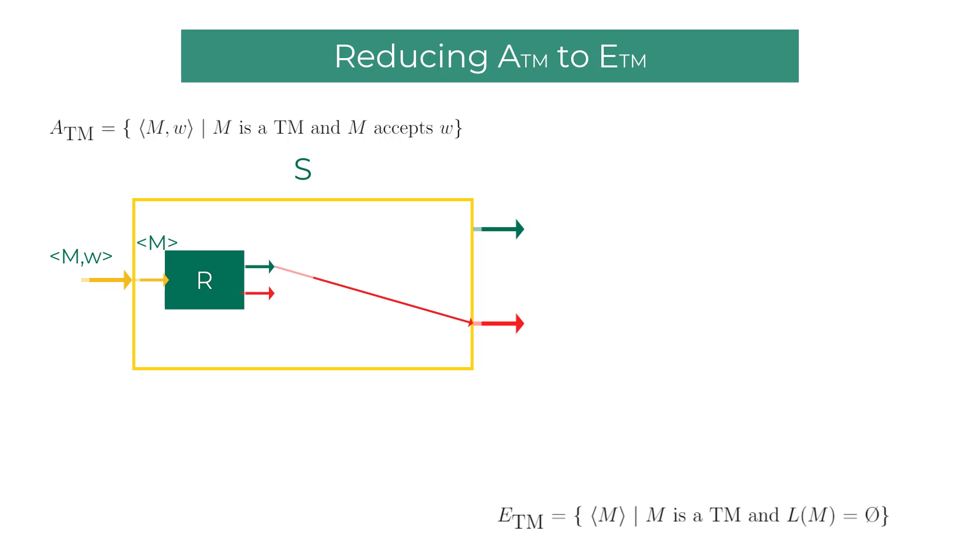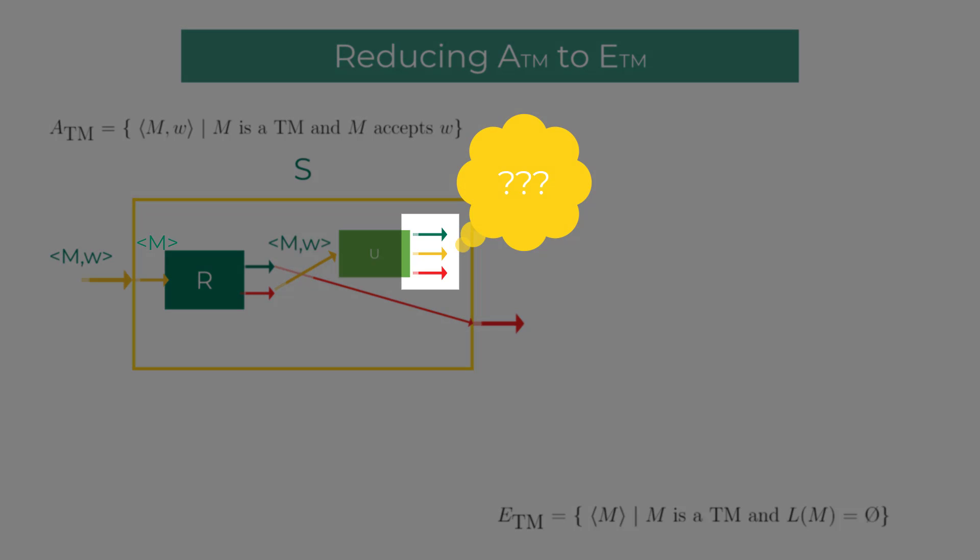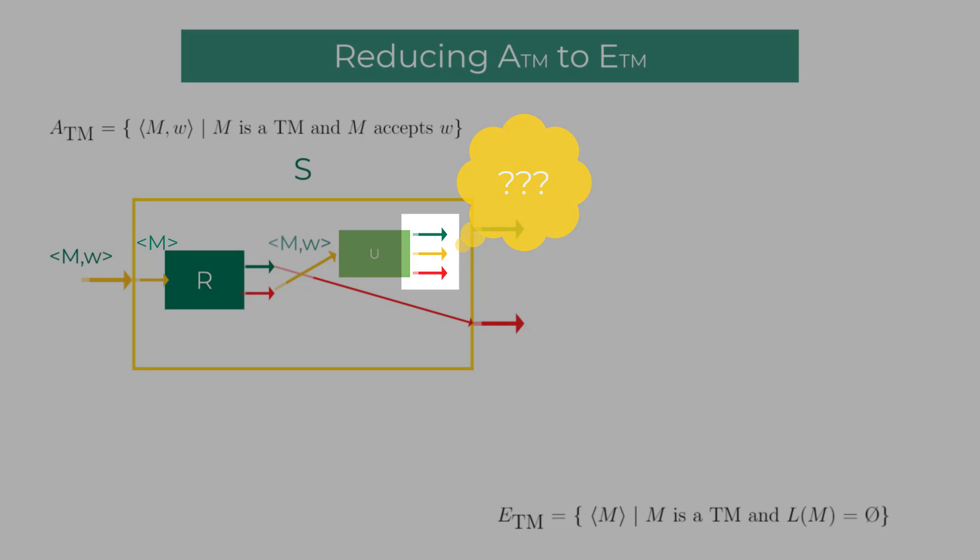When ETM decider R rejects the machine description M, then M is capable of accepting some strings. We don't know what they are, but let's find out using a universal Turing machine U, so we can simulate the word W on M. Here is where we run into a big problem: the universal Turing machine may end up accepting, rejecting, or looping on the string W. Hence, the construction of a decider is not possible with this architecture.